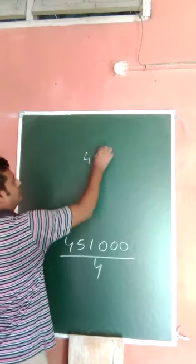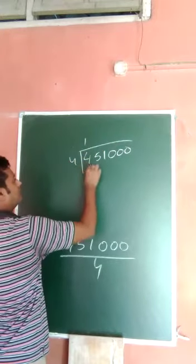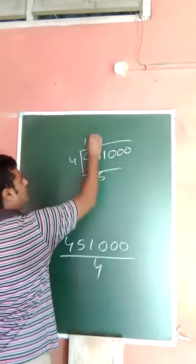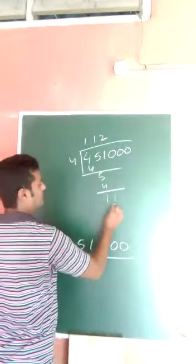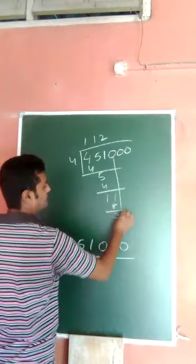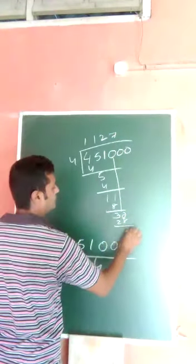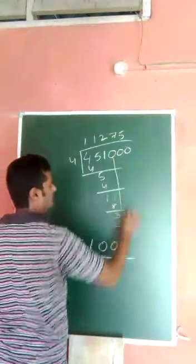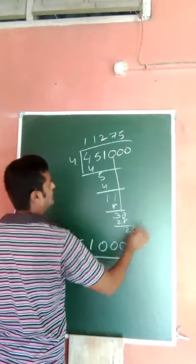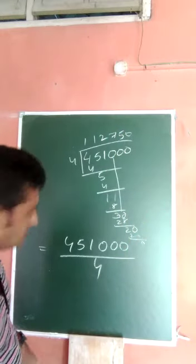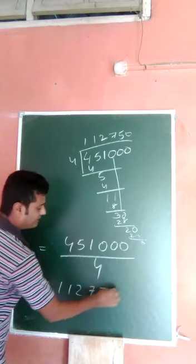451000 divided by 4: 4 ones are 4, plus 5, 4 ones are 4. One, so 11, 4 twos are 8, 3. So this 0 comes here, so 4 twos are 8, 20, so 4 fives are 20. Okay, so this is 112750.